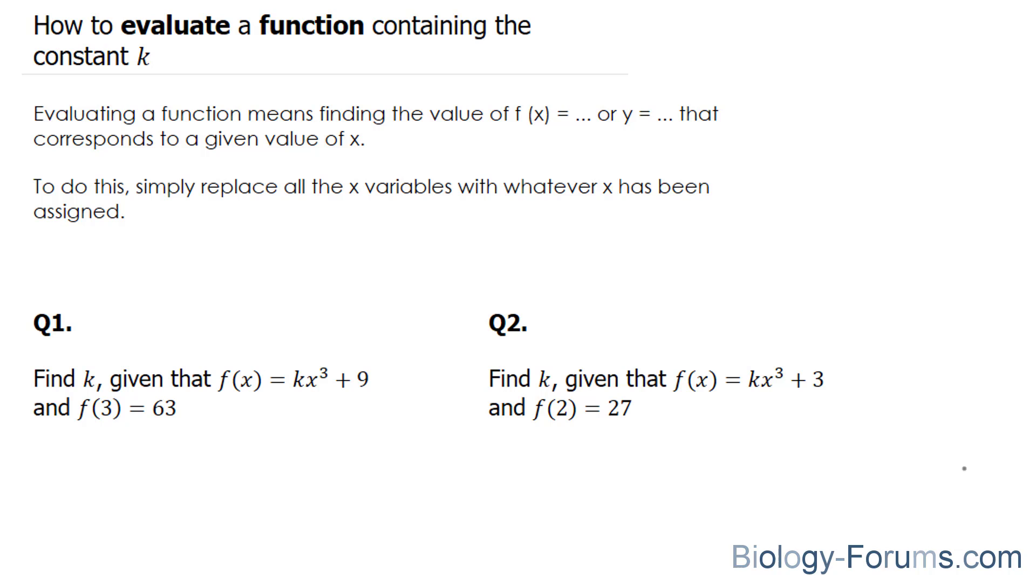Let's start off with question number one. In question number one, they ask us to find k given that f of x is equal to k times x to the power of 3 plus 9 and f at 3 is equal to 63. So we'll start off by substituting this 3 into our function f of x.